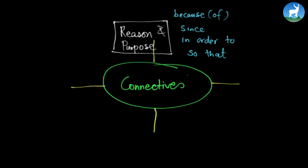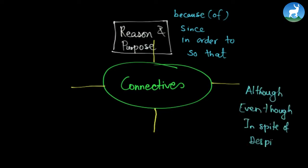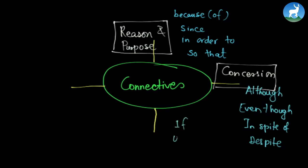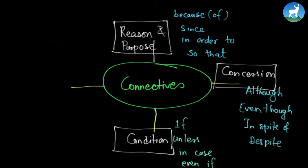Now let us look at the second set. There were words like 'although', 'even though', 'in spite of', and 'despite'. These conjunctions have a special name and it is called concession — so these are called concession connectives. After that we have other words like 'if', 'unless', 'in case', 'provided that', or 'even if' — these are called condition connectives. Finally, we have another set of words like 'after', 'before', 'since', 'when', and 'while' — these are called time connectives.